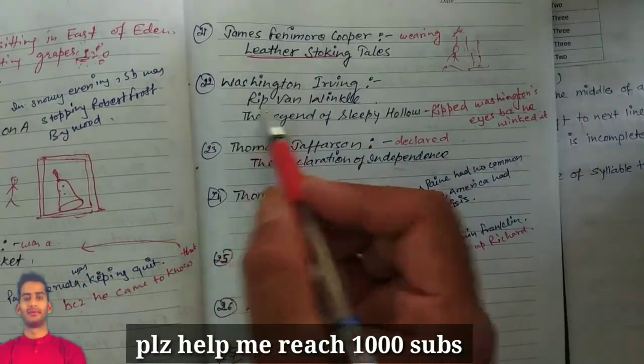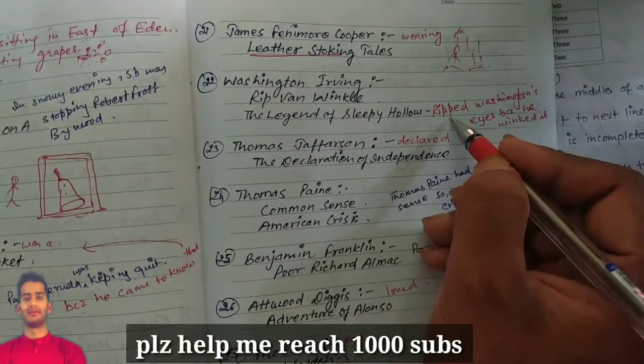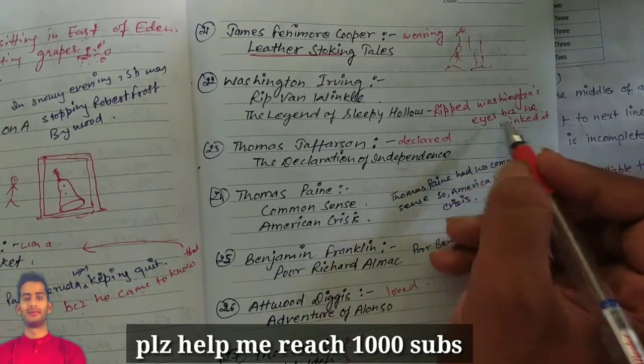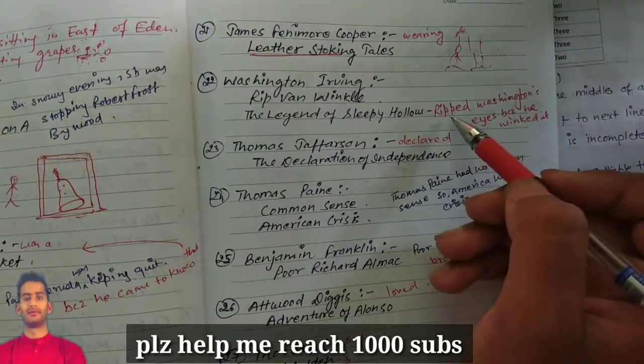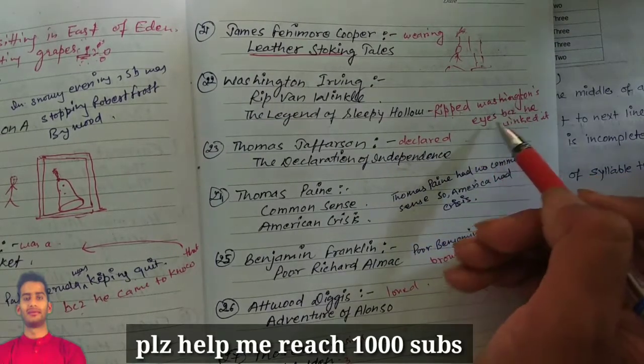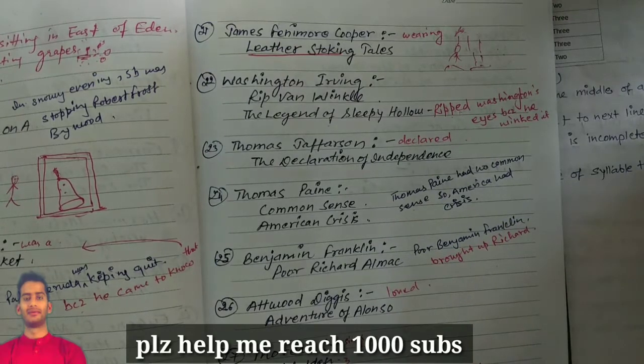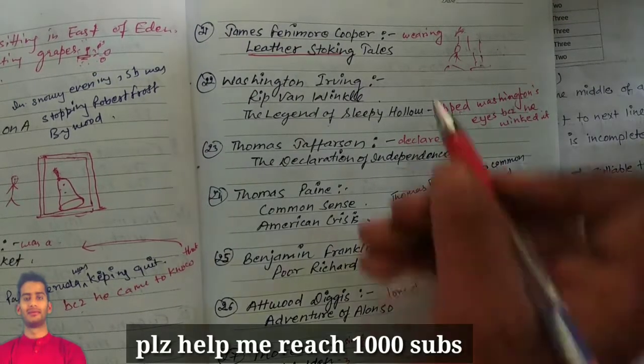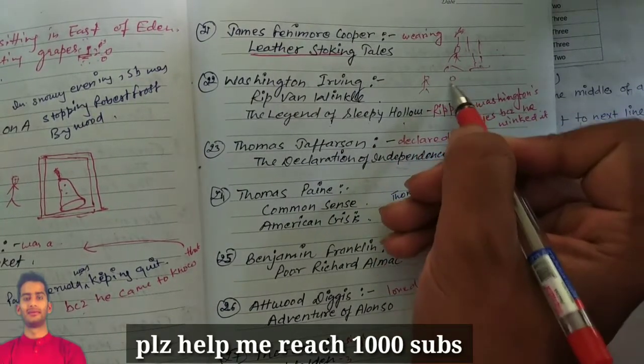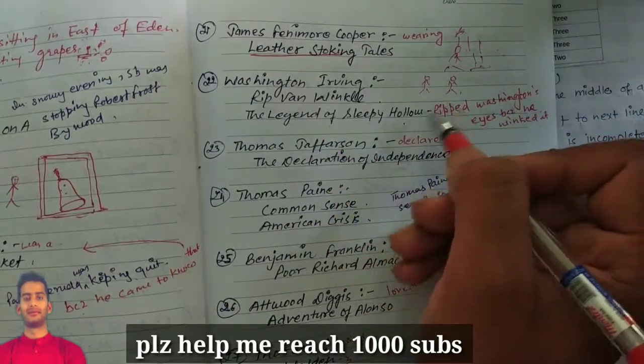Next is Washington Irving. Washington Irving, Rip Van Winkle. So he ripped Washington Irving's eyes but he winked it. But still he winked with it, okay? So you can see the Legend of Sleepy Hollow ripped Washington Irving's eyes but he still winked it. Because he winked to the Legend of Sleepy Hollow, so he ripped his eyes out.